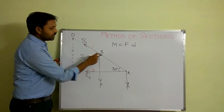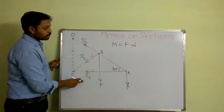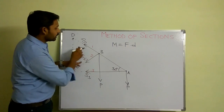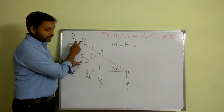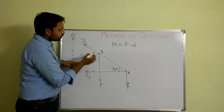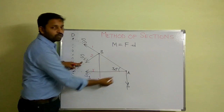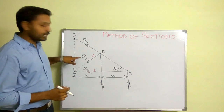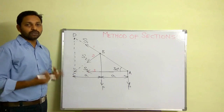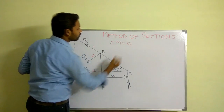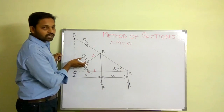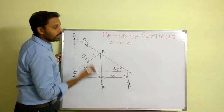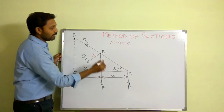If I consider B as the moment center I can eliminate S1 and S2 and then find S3. To find S2, I need to select a moment center where S1 and S3 commonly pass through — that is point A. So if I consider point A as the moment center I will be able to find S2 by applying the moment equation sigma MA equals zero.